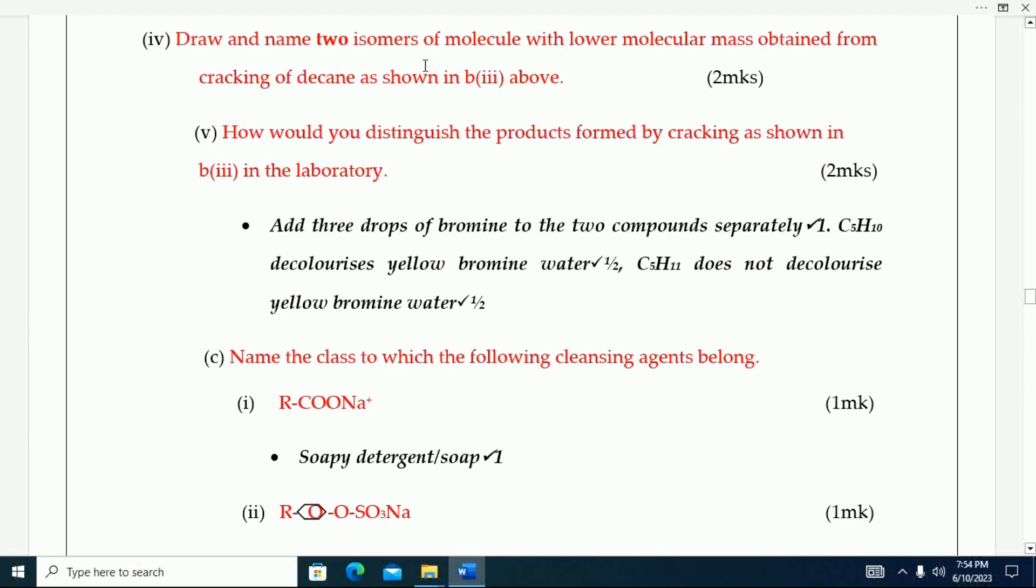Draw and name two isomers of molecule which lower molecular mass obtained from cracking of decane as shown in B(iii) above. How would you distinguish between the products formed by cracking in the laboratory? Add three drops of bromine to the two compounds separately. One decolorizes yellow bromine water while the other one does not decolorize yellow bromine water.